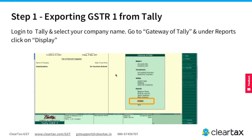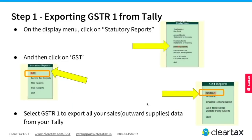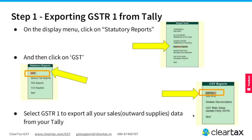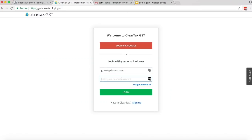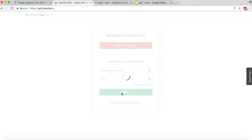Step 1: Exporting GSTR1 from Tally. Log in to Tally and select your company name. Go to Gateway of Tally and under Reports, click on Display. On the Display menu, click on Statutory Reports and then click on GST. Now select GSTR1 to export all your output supplies data — i.e. sales data — from Tally. You will be taken to the GSTR1 screen. Review the summary and click on E-Returns on the right sidebar to export the data. Choose the Excel option to save the file as an Excel file.